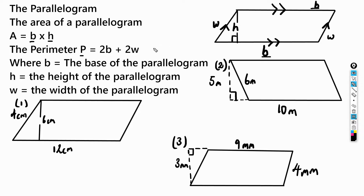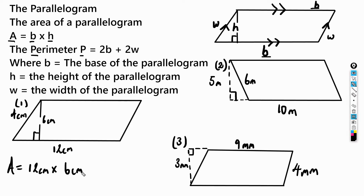We're going to do three examples, finding both the area and the perimeter for each parallelogram. For number one, the perpendicular height is 6 centimeters and the base is 12 centimeters. The area equals 12 cm × 6 cm = 72 centimeters squared.